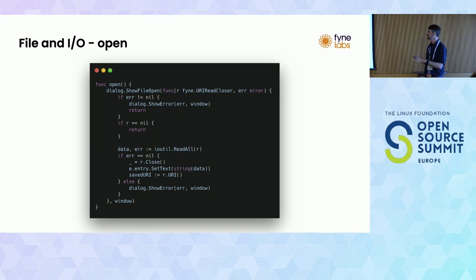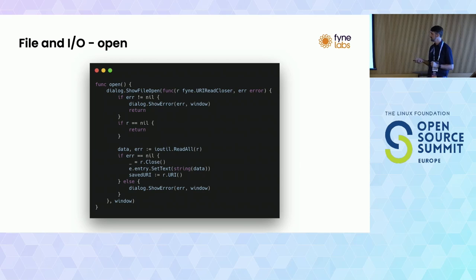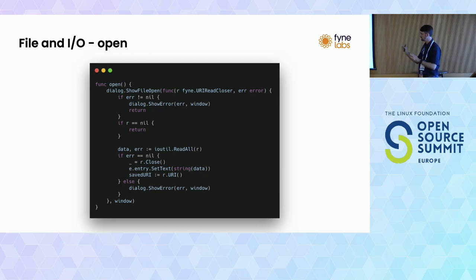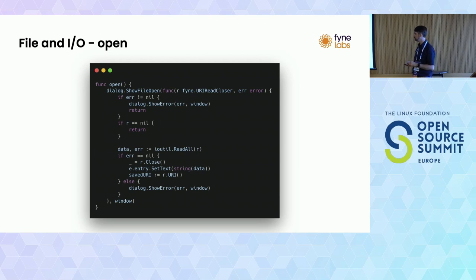If there's no error we'll continue, but the user could have cancelled, so we check for a nil reader and return if nothing happened. The rest is Go code reading all the data from a stream. If there's no error, we close it because we're done, then set the entry text from the string representation of the data read. We save the URI - the resource identifier - for the file we opened for later. Pretty straightforward opening in general.